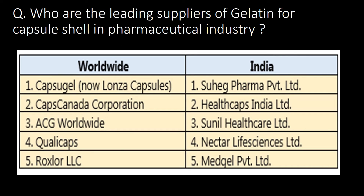Who are the leading suppliers of gelatin for capsule shells in the pharmaceutical industry? The top five leading suppliers worldwide are CapsuGel, CapsCanada, STG Worldwide, QualiCaps, and Roxlore. Whereas in India, the top five suppliers for gelatin for capsule shells are Swag Pharma, HealthCaps, Sunil Healthcare, Nectar, and MetGel.